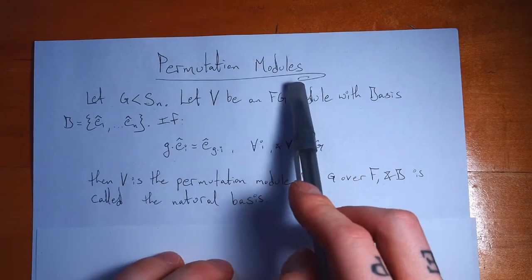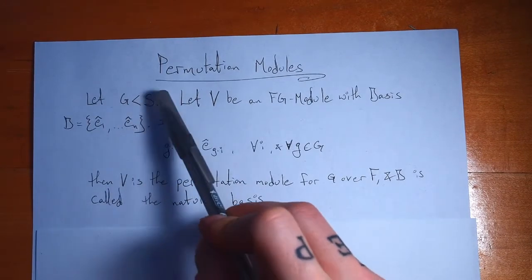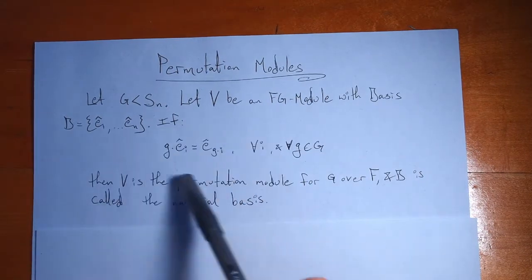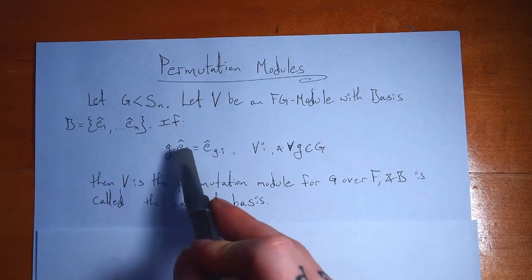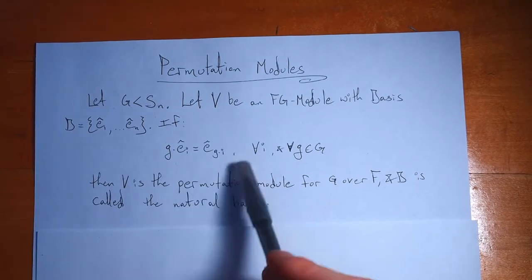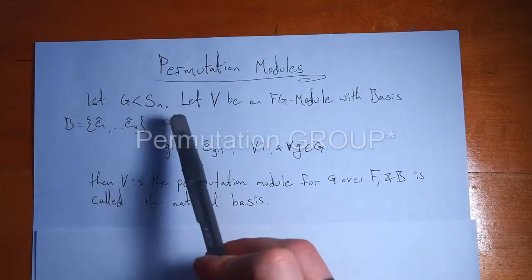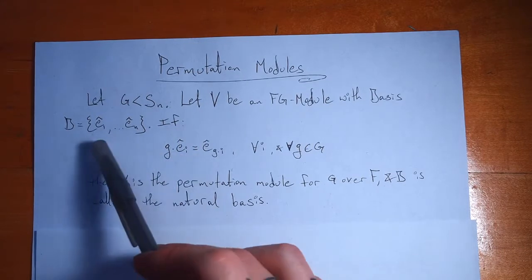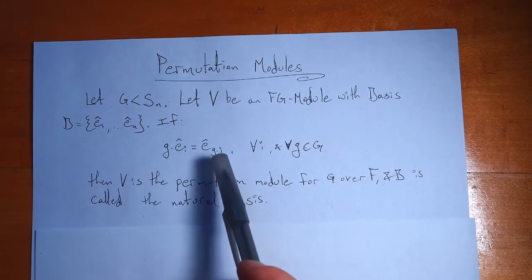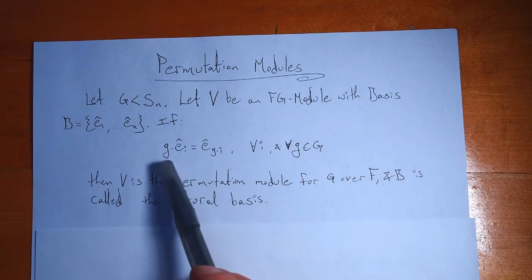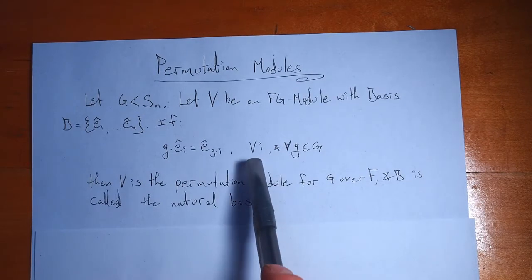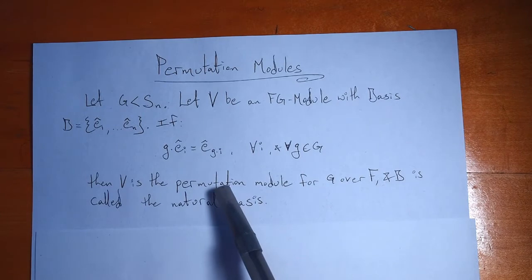Let's look at the definition of a permutation module. If you have a group that's a subgroup of a permutation group S_n, and we have a vector space that's an FG module with a basis, if the group action behaves such that when a group element acts on a basis vector, we just let that group element act on the index of that basis vector — since our group elements are bijections on n elements, we let the bijection act on i, the index of our basis vector — and if that holds for all i in the basis and for all group elements, then we say that V is a permutation module.